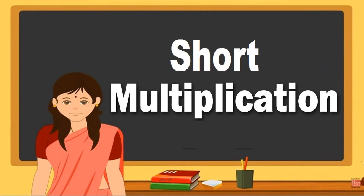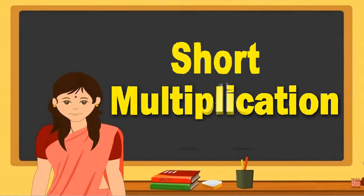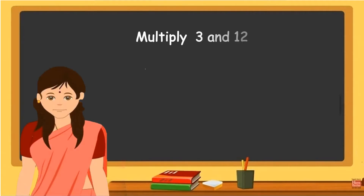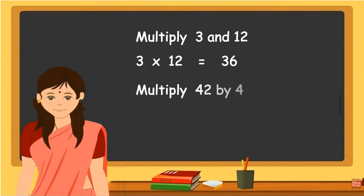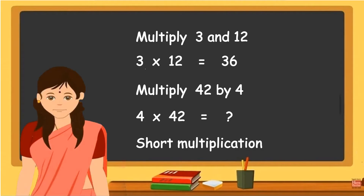Hello children. Now that you have understood the concept of multiplication and the terms that indicate it, let us continue with the topic and learn short multiplication. If you get a question to multiply 3 and 12, you write 3 into 12 and the product is 36 because you know the tables — 3 twelves are 36. But if you are asked to multiply 42 by 4, you do not know the product because you only know the tables of 4 up to 4 twelves. For that you need to know short multiplication, which we are going to learn in this video.